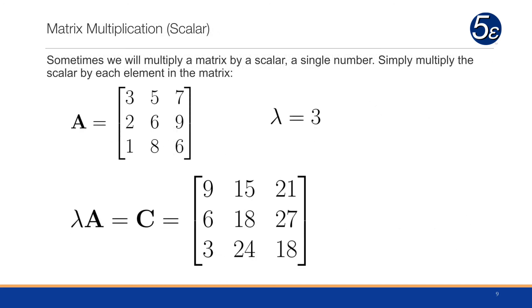Sometimes we multiply a matrix by a scalar, a single number. We only need to multiply the scalar by each element in the matrix. If we did lambda A to get a new matrix C, we would take lambda, which is 3, and multiply it by each entry in the corresponding matrix. We end up with 9, 15, 21, 6, 18, 27, and 3, 24, 18.